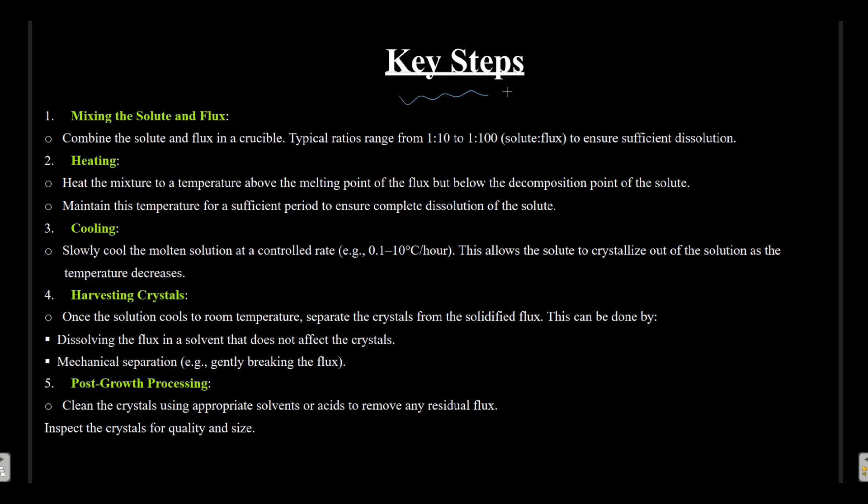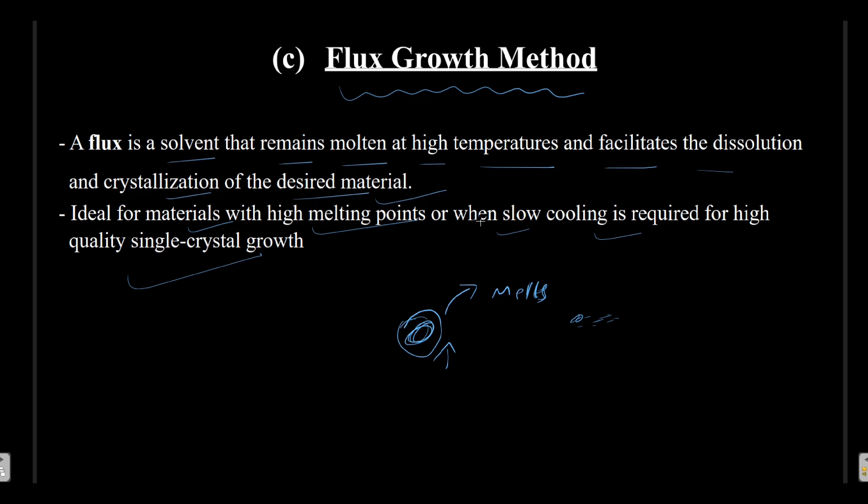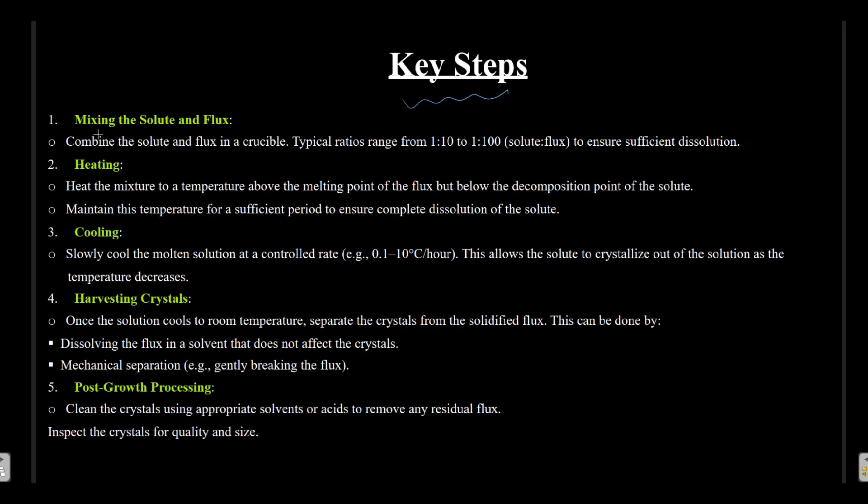Now, the key steps involved in this process, that is flux growth method, are: first one is mixing the solute and flux. So a flux material should be taken and the solute should be mixed to it - that is, combine the solute and flux in a crucible.